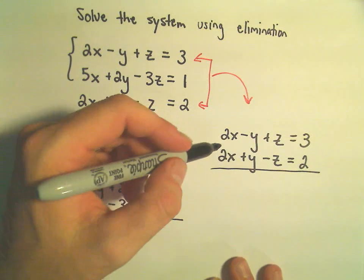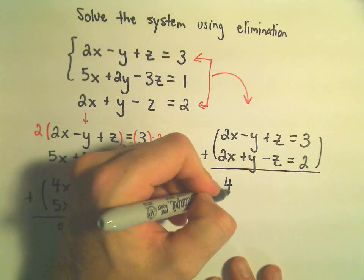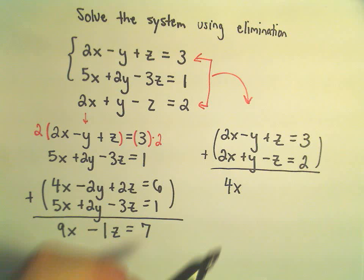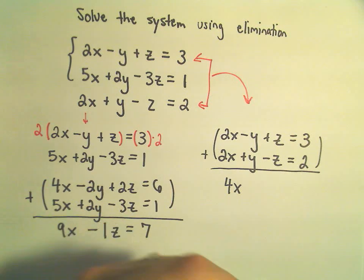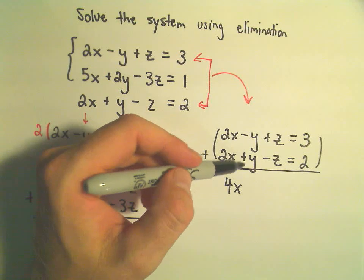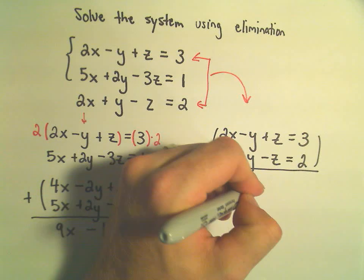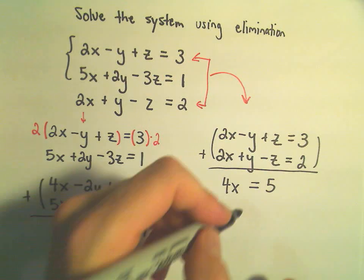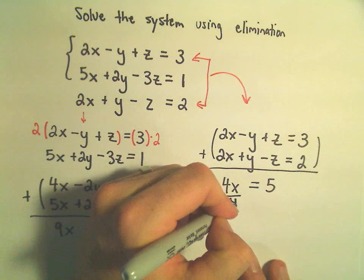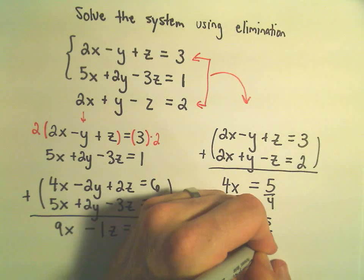Actually what else is going to happen, notice if I add these together, I'm going to get 4x, my 2x plus 2x will give me 4x. Negative y plus y cancels out. Positive z plus a negative z also cancels out. And then we have 3 plus 2 which is 5. Well, if I divide both sides by 4,